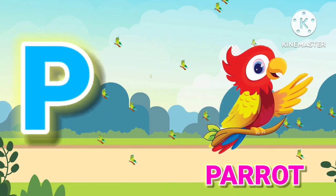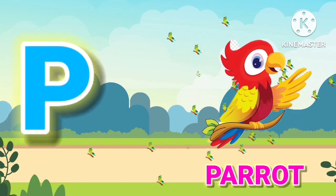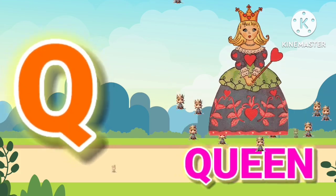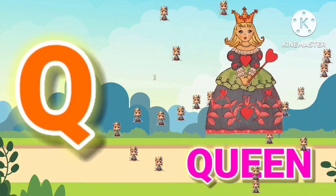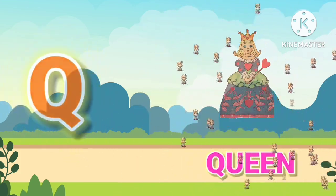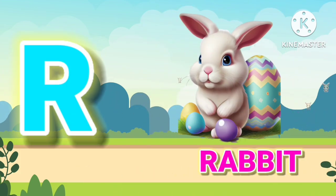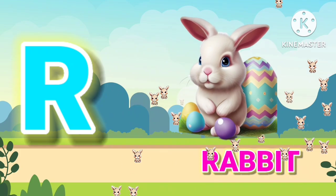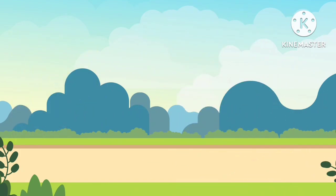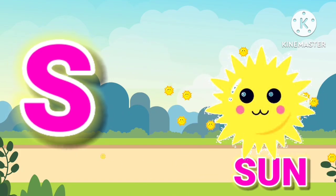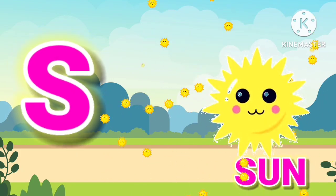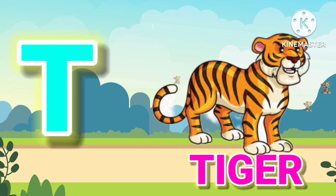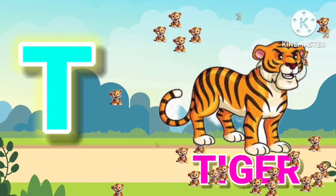P for parrot, Q for queen, R for rabbit, S for sun, T for tiger.